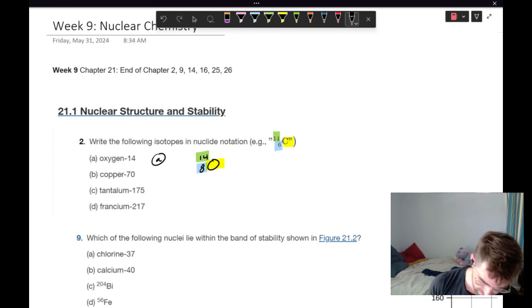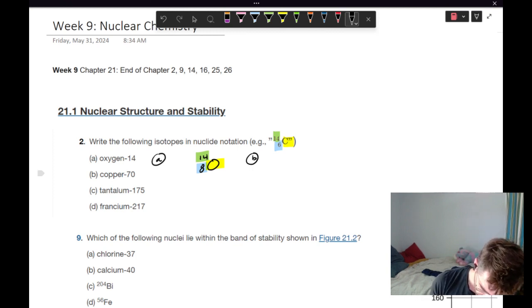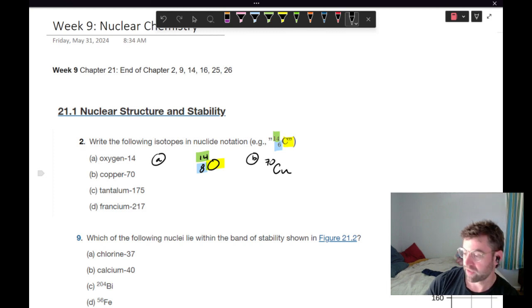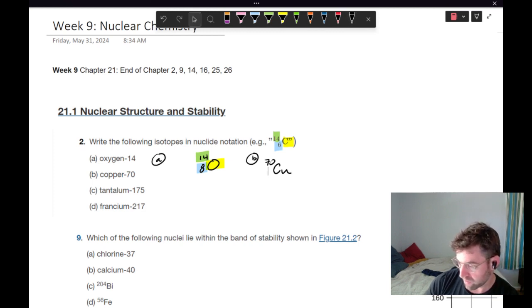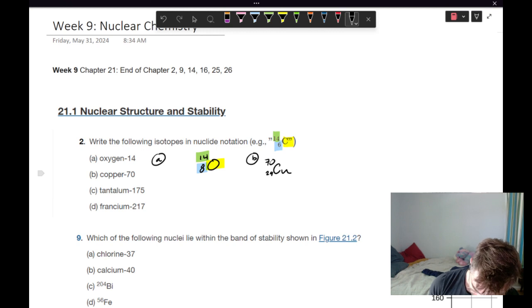So that's our first one. This is nuclide notation. So for B, we've got copper-70. Copper is Cu. 70 is our mass number on the periodic table. Our atomic number is 29.